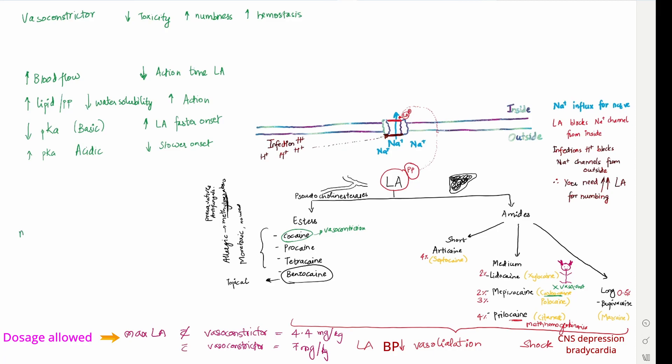Now, maximum amount of epinephrine for a patient with ASA-1 is about 0.2 mg and maximum amount of epinephrine for a cardiac patient is about 0.04 mg.